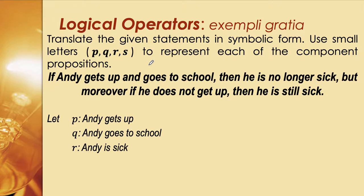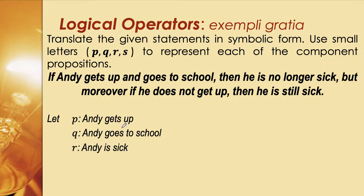We're going to translate the given statements into symbolic form. We'll use small letters p, q, and r only to represent each component or atomic proposition. The statement is: 'If Andy gets up and goes to school, then he is no longer sick; but moreover, if he does not get up, then he is still sick.' We let p = Andy gets up, q = Andy goes to school, and r = Andy is sick.